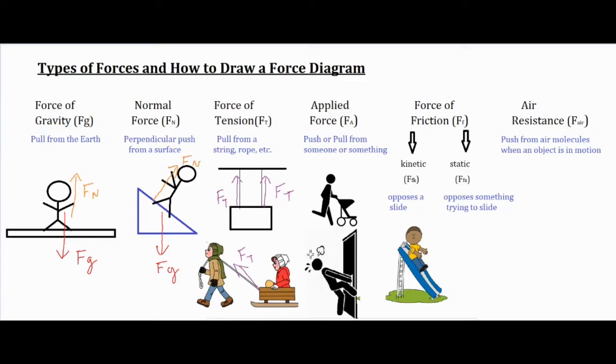For the fourth one, it is an applied force. It's a push or pull from someone or something—that is a very vague definition. The way I look at it is if there's an object or a person in your picture that is pushing or pulling on it that isn't a rope type material, then it kind of falls into this vague category of applied force.